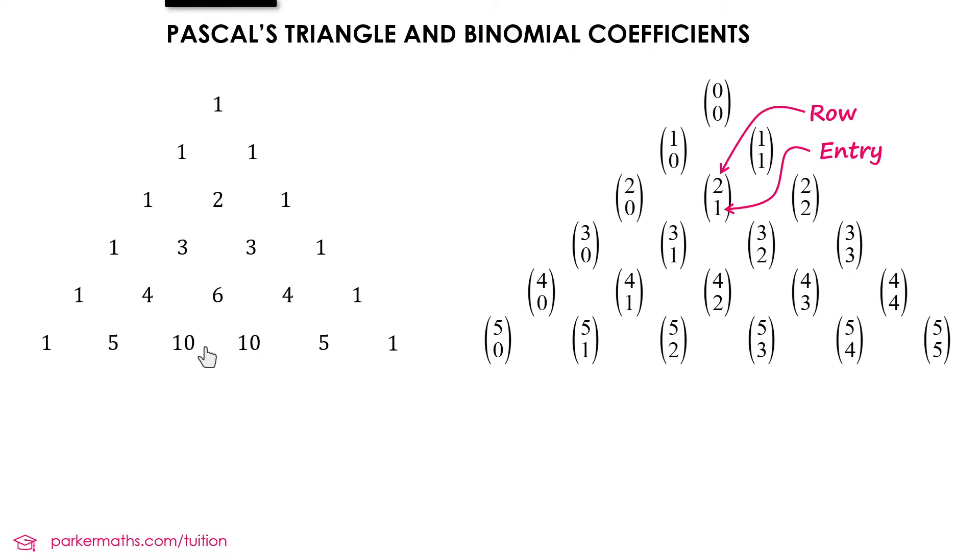So let's say we wanted to identify 10 here in Pascal's triangle. We start at row 0 and count down: 0, 1, 2, 3, 4, 5. So the fifth row.